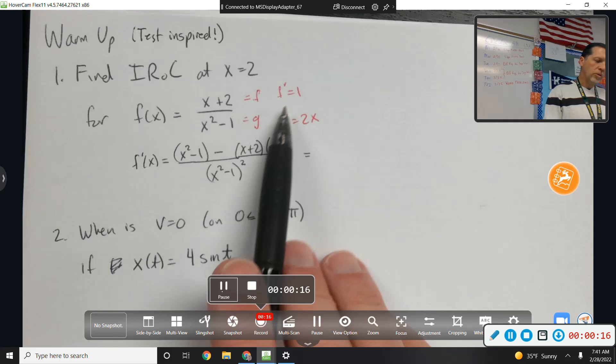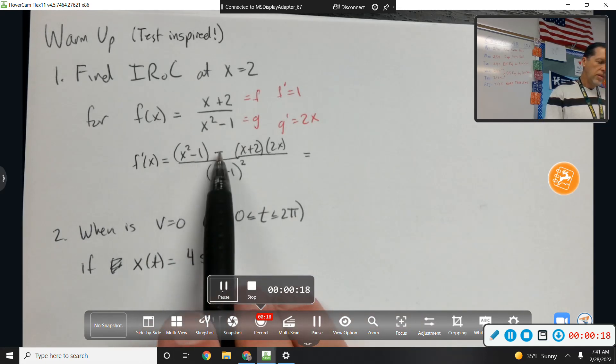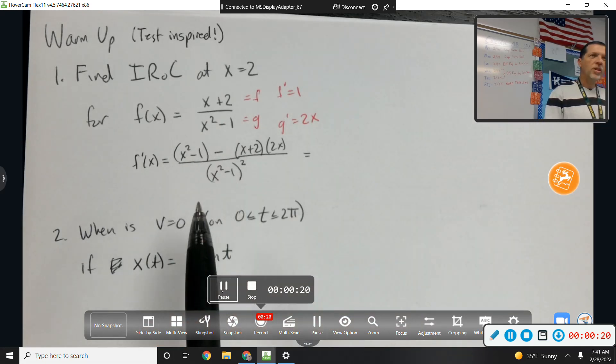So there's the quotient rule, g f prime minus f g prime over g squared.